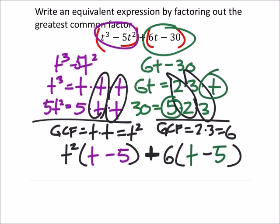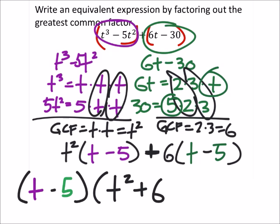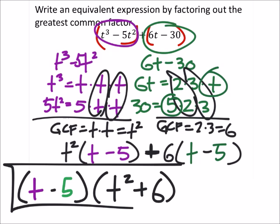Now we can see that we would factor out t minus 5. And then in the other set of parentheses, we've got a t squared plus 6. Factored by grouping, and that's a minus by the way.